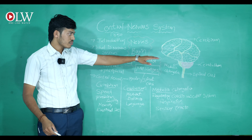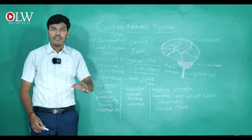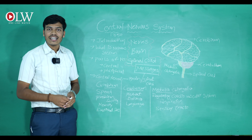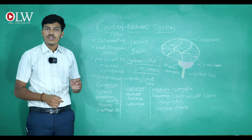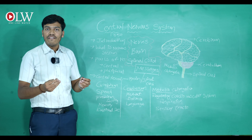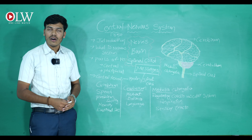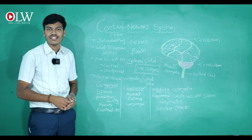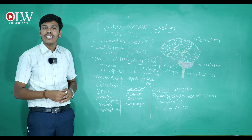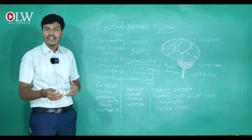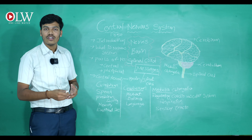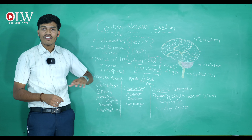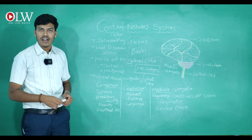Before going deeper into the parts of the brain, actions are of two types: voluntary actions and involuntary actions. Voluntary actions are the actions which are under the control of your brain. Examples of voluntary actions are movement of hands, smiling, facial expressions, and movement of the body.